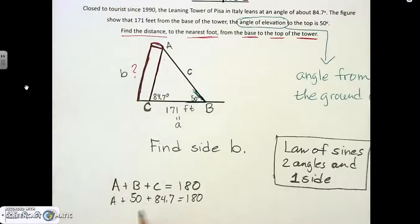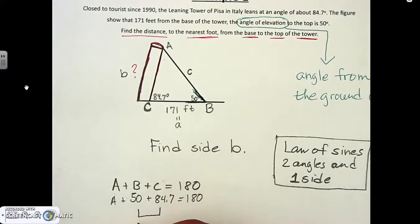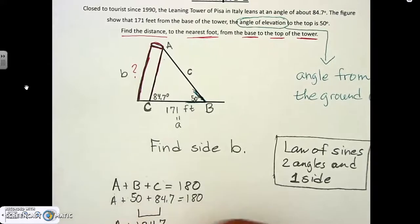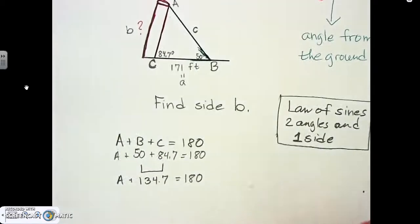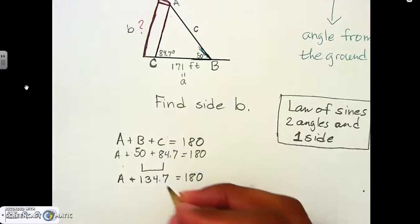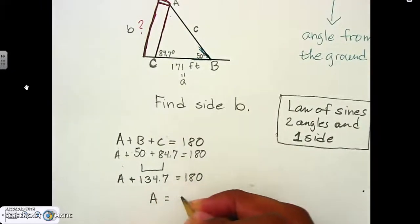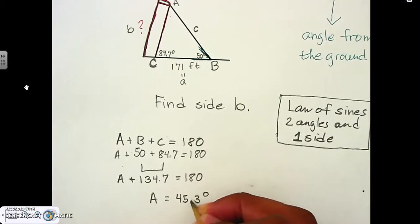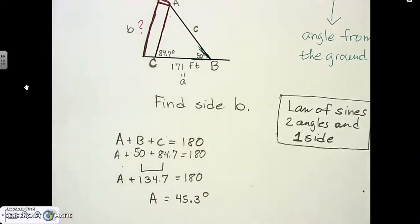Adding the two known angles: 50 + 84.7 = 134.7 degrees. Subtracting from 180, angle A equals 45.3 degrees.